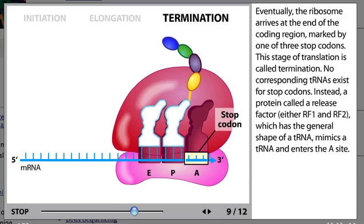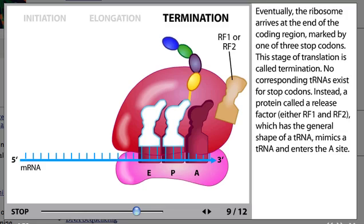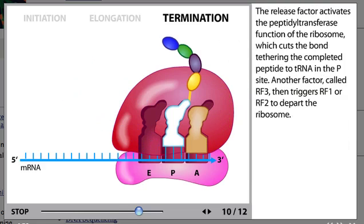Instead, a protein called a release factor, either RF1 or RF2, which has the general shape of a tRNA, mimics a tRNA and enters the A site. The release factor activates the peptidyltransferase function of the ribosome, which cuts the bond tethering the completed peptide to tRNA in the P site.